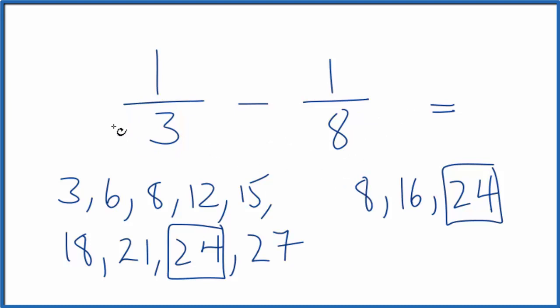We can do that by multiplying 3 times 8. 3 times 8 is 24, but we have to put 8 on the top too. So 8 over 8, that's just 1. We're not really changing the value, just the way we write it. Over here, let's multiply 8 times 3, because that will give us 24 as well.